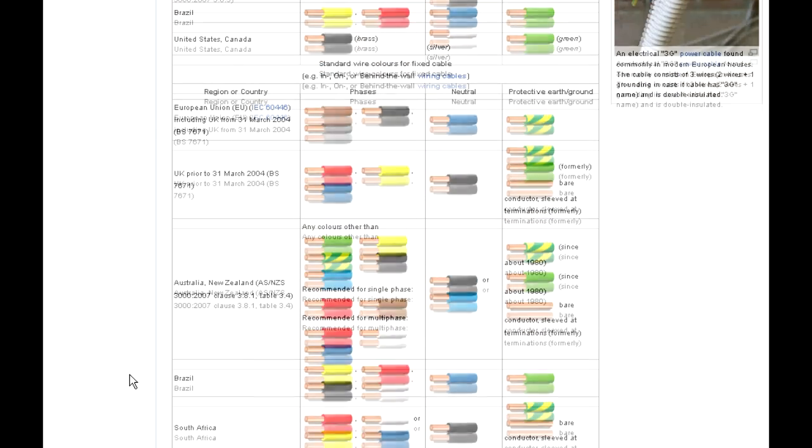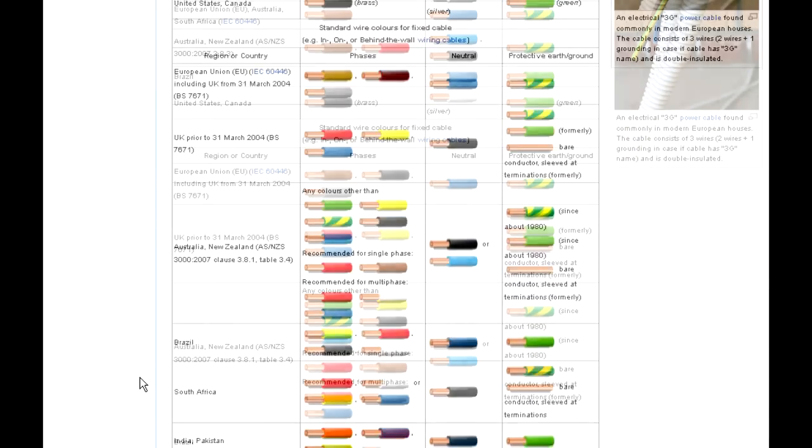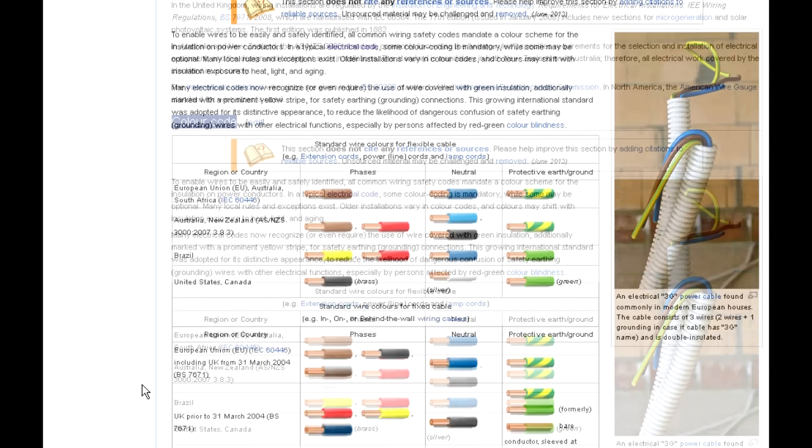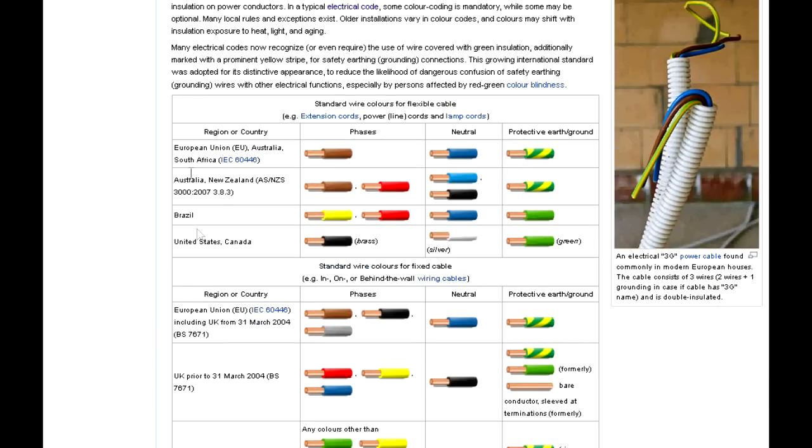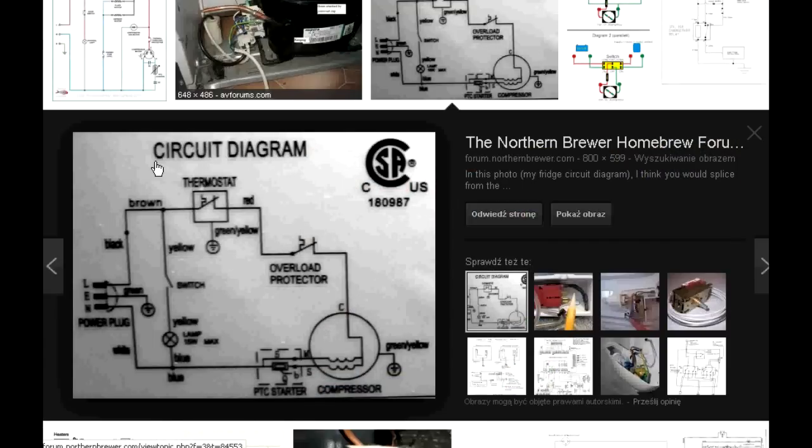Check the article yourself, it will be useful. Now let's talk about wiring fridges in general. You might find a circuit diagram on your own fridge, or you can Google its part number and find it on the internet or in a manual.